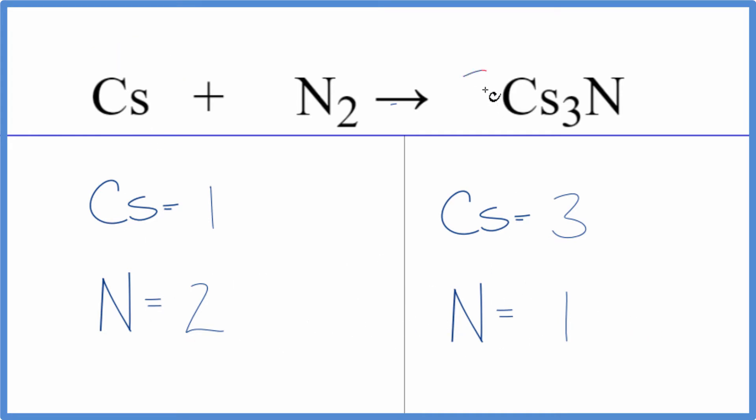Let's just put a 2 here in front of the Cs3N. Now we have three times two, that gives us six, but the two applies to everything. So we have one times two, that gives us two nitrogen atoms.